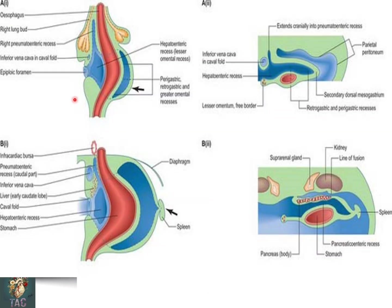Here you can see the anterior direction, posterior, the right border, and the left border. This is the hepatophrenic recess of the lesser omentum and this is the right pneumoenteric recess. These are the right and left lung buds which are present. This part is the esophagus. This part is the developing stomach. And here you can see the perigastric, retrogastric, and greater omental recesses which are forming. In the right side of the pericardioperitoneal canal, some cavities appear, and when these cavities coalesce they form a recess called the pneumoenteric recess.